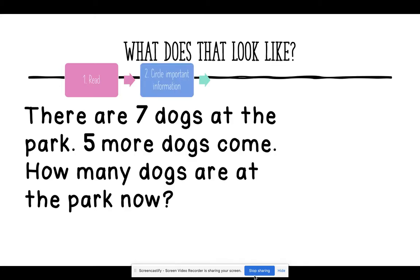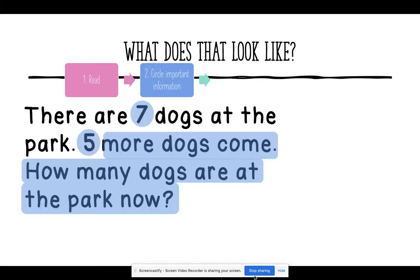Our second step is to circle the important information. Here, the important information includes the seven dogs that we started with, the five more dogs that came, and then the question, how many dogs are at the park now?